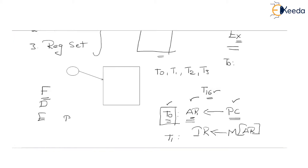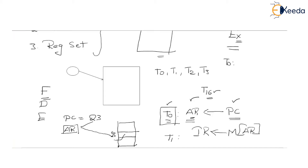Let us say the program counter is equal to 23. Then 23 will get transferred to the address register, which now holds 23. Taking this 23, the address register sends a memory reference to main memory. Immediately, this address will get located in main memory where there is an instruction, and this instruction should get transferred to the instruction register. So in T1, the second clock cycle, at the memory location specified by the address register, the instruction will get transferred to the instruction register.